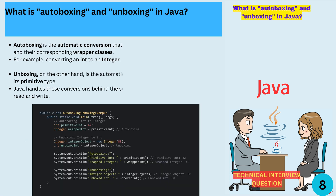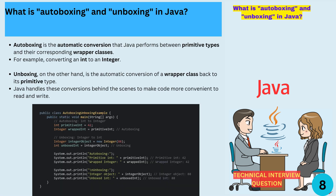What is autoboxing and unboxing in Java? Autoboxing is the automatic conversion that Java performs between primitive types and their corresponding wrapper classes. For example, converting an int to an Integer. Unboxing, on the other hand, is the automatic conversion of a wrapper class back to its primitive type. Java handles these conversions behind the scenes to make code more convenient to read and write.